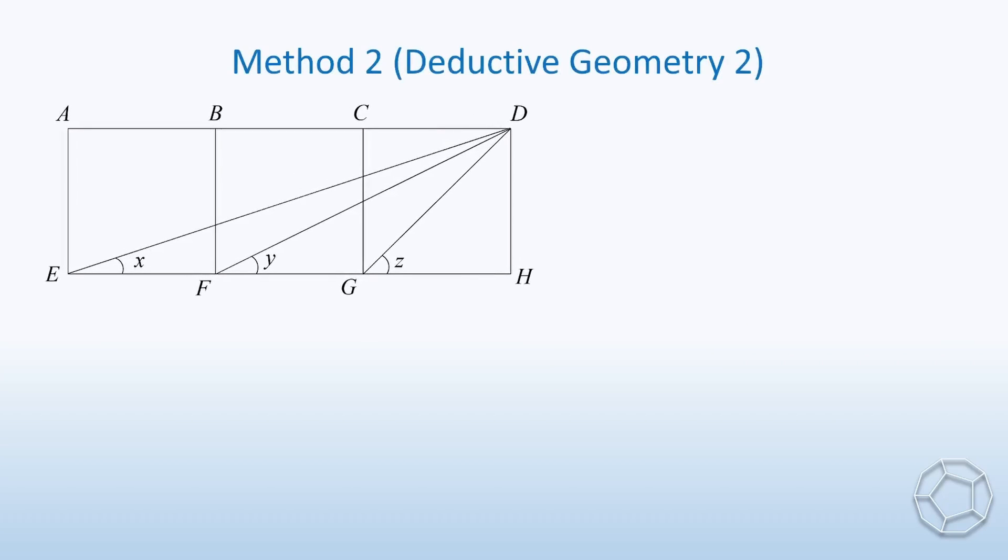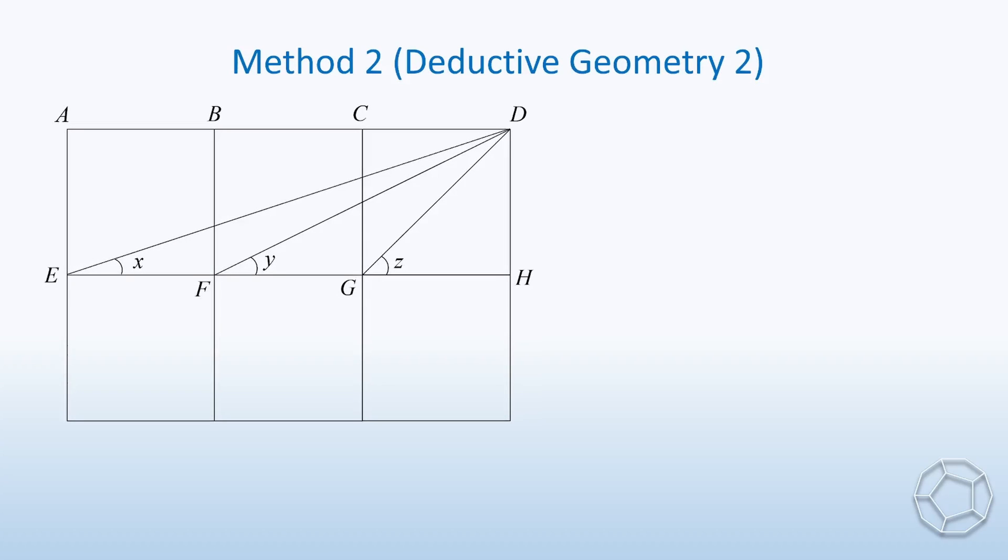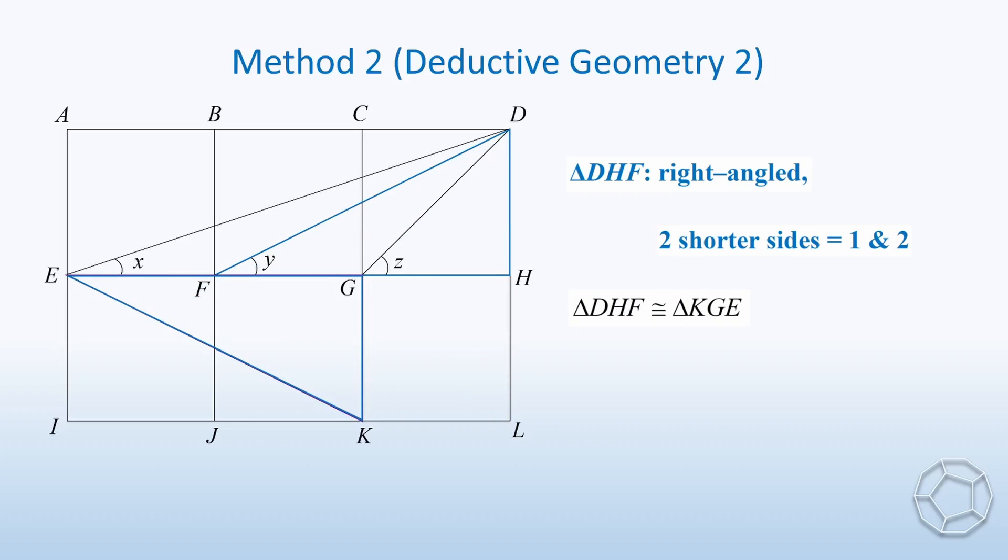For the next one, we need to add three more squares below, and label four extra vertices as I to L. Let's focus on the blue triangle DHF. It is right-angled, with two shorter sides being 1 and 2. Actually, there are some other triangles of the same type. We construct the side EK. Then, this purple triangle is also of this type. Put it in a formal way, triangle DHF is congruent to triangle KGE.